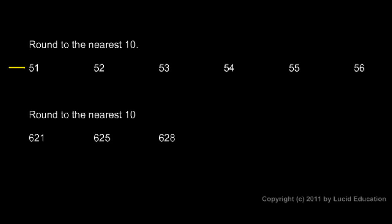We'll start with this first row. We're told to round to the nearest ten. 51 is going to be either 50 or 60, and you can see that 51 is closer to 50 than it is to 60, so the answer is 50. According to the rules, we look at the tens place — the next digit is less than five so we round down. The same thing happens with other numbers here; the digit is less than five so we round down, and all of these round to 50 until we get up to 55.